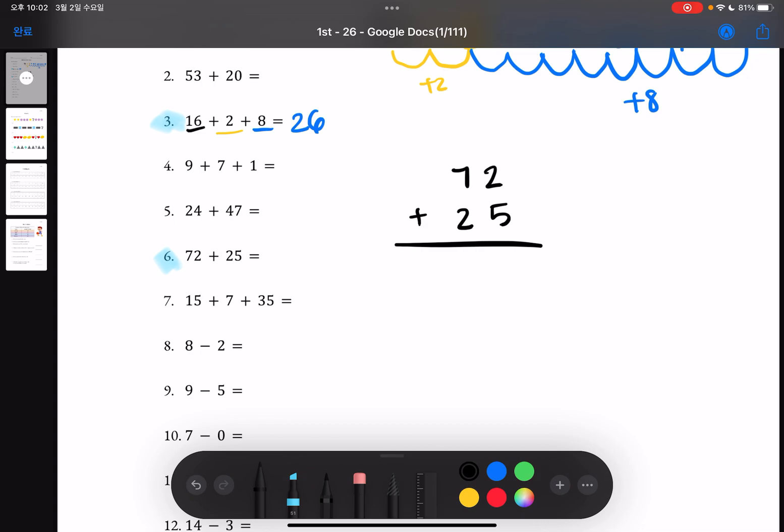So we'll start by adding up the 2 and 5 together, so 2 plus 5 is equal to 7, and 7 plus 2, from 7 you go 8, 9. So you know that it's 9 and the answer for number 6 is 97.